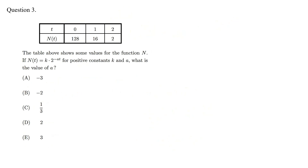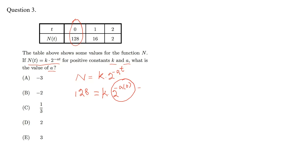The next question: the table above shows some values for the function n. If n is equal to k times 2 to the power of negative at, for positive constants k and a, what is the value of a? Write the function n equals k times 2 to the power of negative at and put in the values where n is 128 and t is 0. Since 2 to the power of 0 is 1, we get k equals 128.